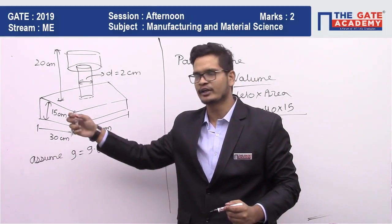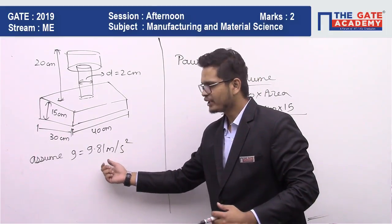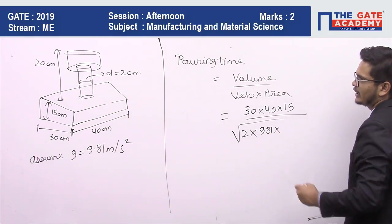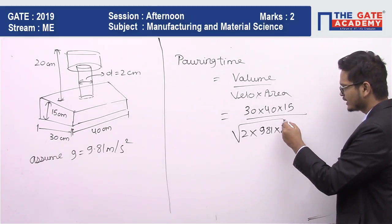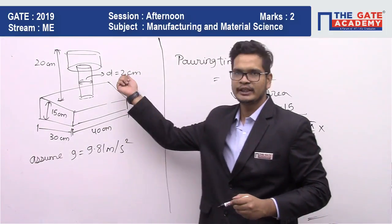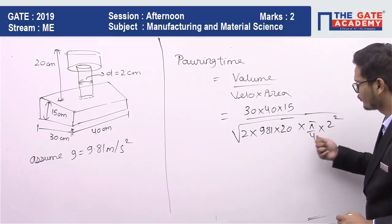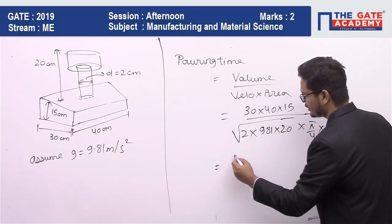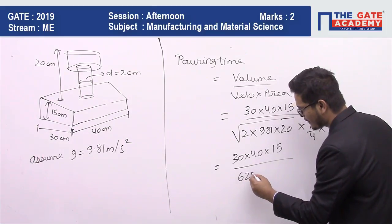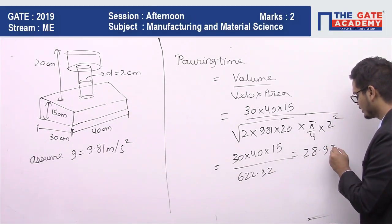Height we are taking in centimeters, so acceleration due to gravity we will also take in centimeters. 9.81 meters per second squared converts to 981 centimeters per second squared. So this is 981 into 20, all inside a root, into area which is pi by 4 into d squared. d is 2 centimeters, so pi by 4 into 2 squared equals 4. The 4s cancel. Overall we get 30 into 40 into 15 upon 622.32. So the final answer is 28.92 seconds.